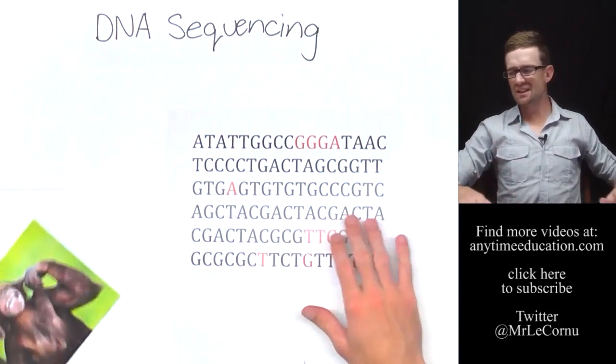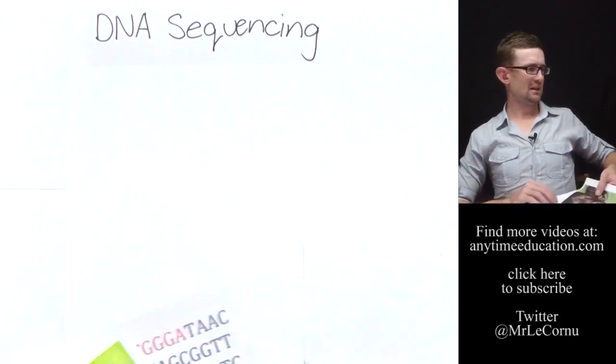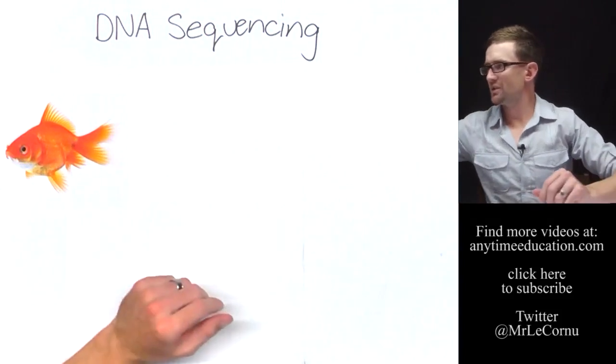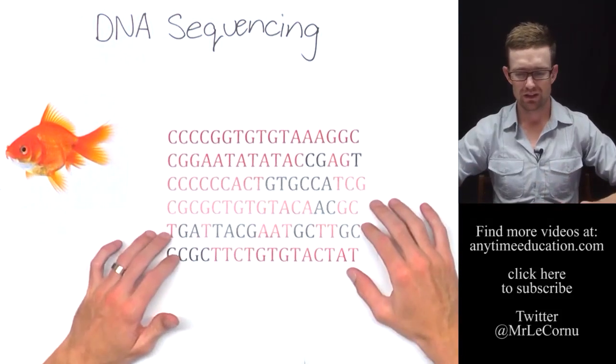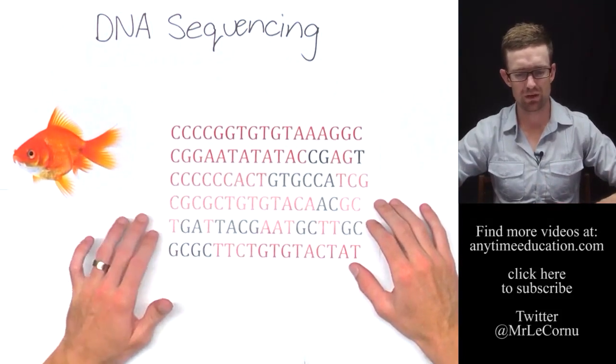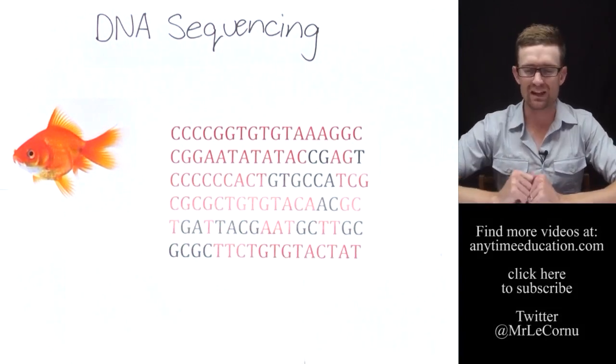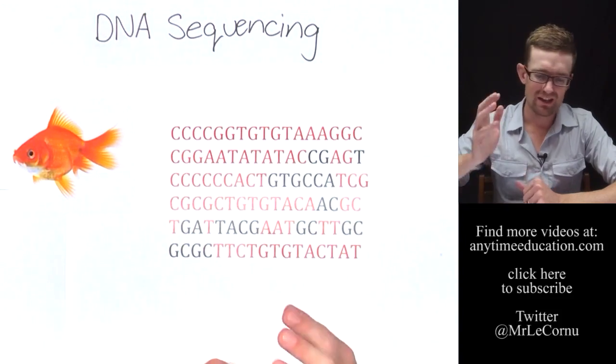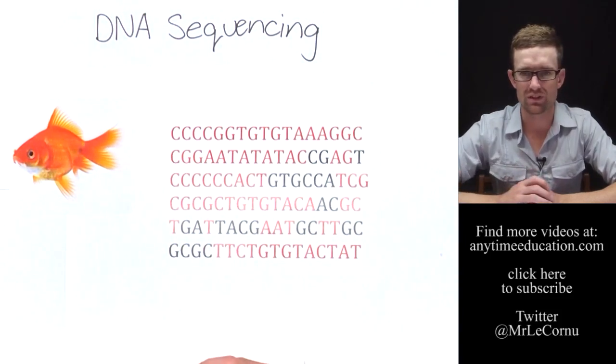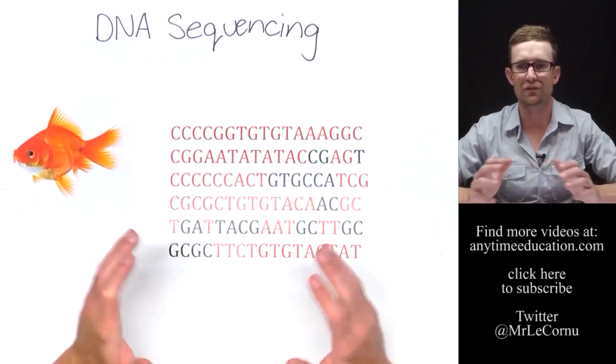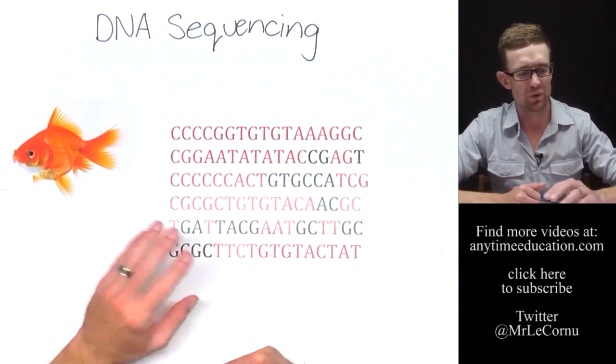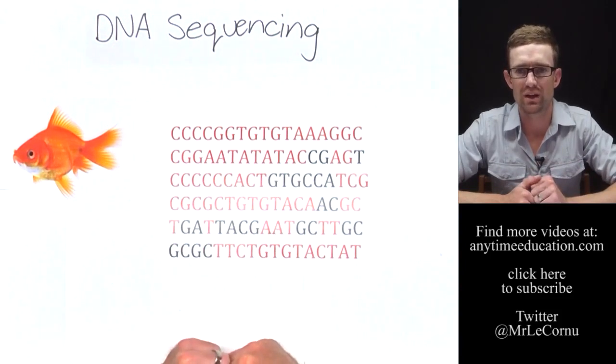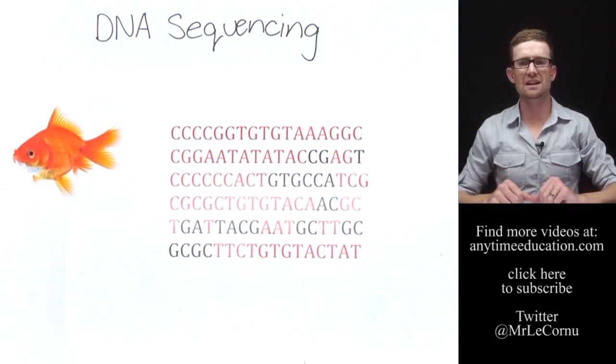Whereas if we look at a different species, like the goldfish, for example, let's bring in the sequence for our goldfish. And this again is compared to human. And you can see the red sections are the differences. The black sections are where there's similar DNA to human. There's a lot more differences. And that shows that there's a further distance of separation between humans and goldfish than there is between humans and chimpanzees. So that's using DNA sequencing.